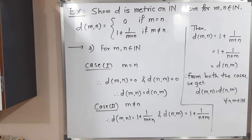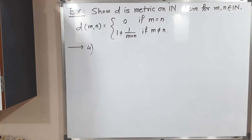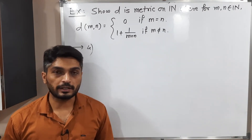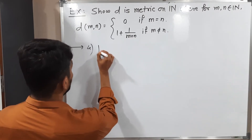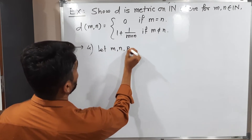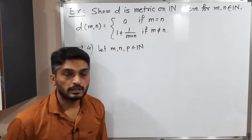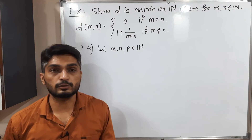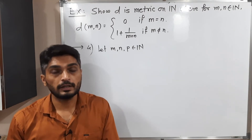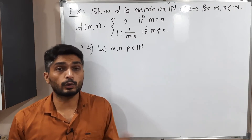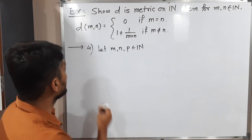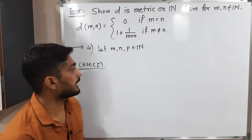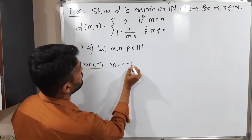Now we prove the fourth condition — the triangle inequality. For this we require three elements. Let m, n, p belong to the set of natural numbers. Since we have three elements instead of two, there will be more cases to discuss. Case 1: m = n = p. All three elements are equal.